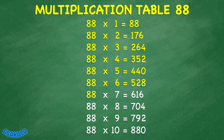88 times 7 equals 616. 88 times 8 equals 704. 88 times 9 equals 792. 88 times 10 equals 880.